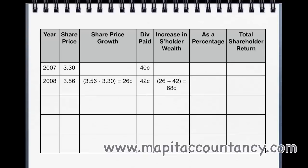As a percentage, we need to think about what we would need to invest to get that $0.68 return. We would have needed to invest at the $3.30 share price in 2007. So $0.68 over $3.30 is a 20.6% return. Always use the previous year's share price. To get the total shareholder return, we have 2 million shares — 2 million times $0.68 is $1.36 million.